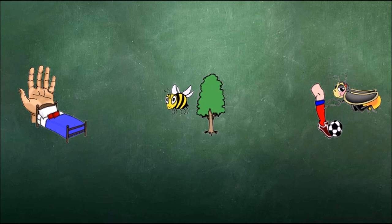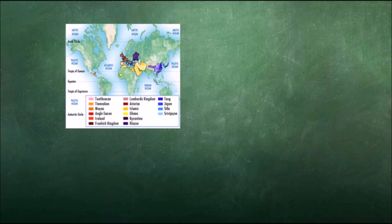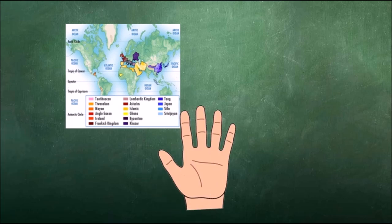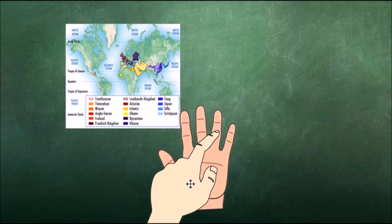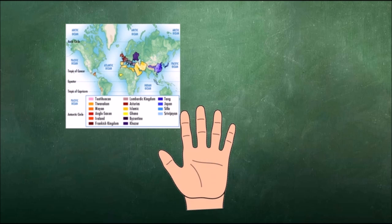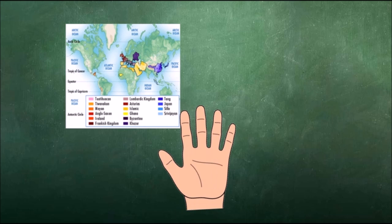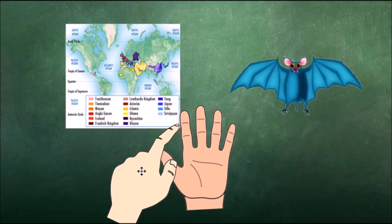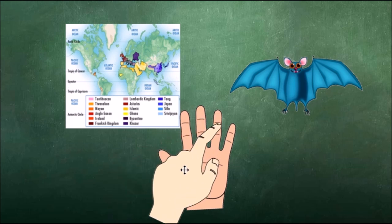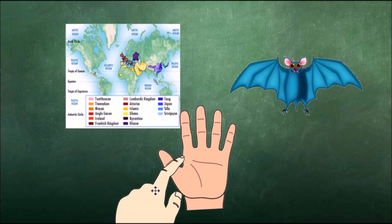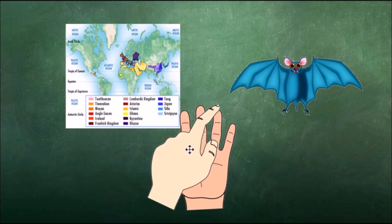After doing a few examples where the sounds are the same, I would switch to words with different ending sounds. What is this a picture of? Students respond with map. We would show the sounds on our fingers: M-A-P. What is the last sound we hear in map? Students respond with P. What is this a picture of? Students respond with bat. We would show the sounds on our fingers: B-A-T. What is the last sound we hear in bat? Students respond with T.